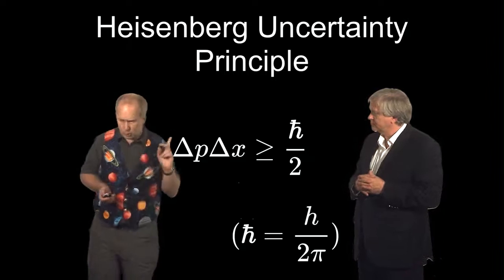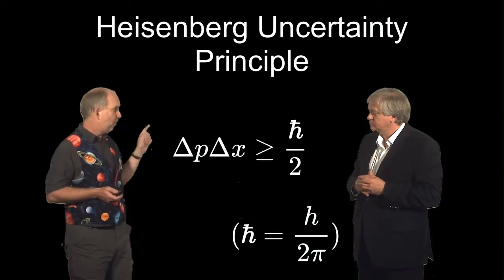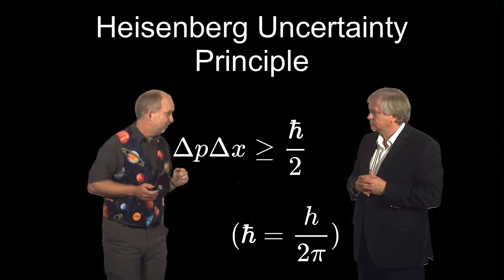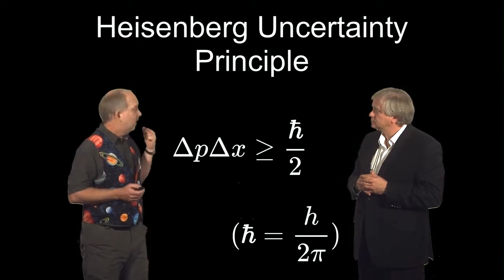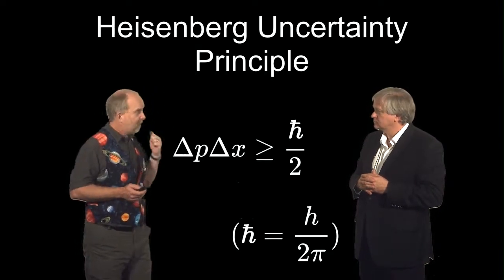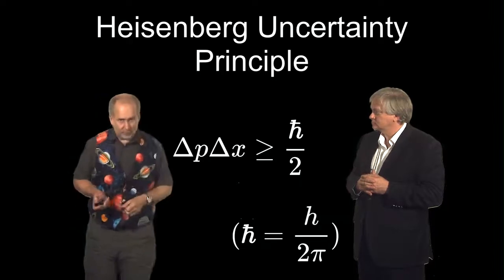So these are the two clues that are going to allow us to work out why white dwarfs like Sirius B can survive. The Heisenberg uncertainty principle and the Pauli exclusion principle. So let's look at that.